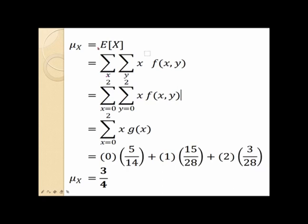For the mean of x, the expected value of x is equal to the double summation over all possible values of x and y of x times the corresponding probabilities f of x, y. Note that the summation over all possible values of y of x times f of x, y gives the marginal distribution of x, denoted by g of x. So the expected value of x is equal to the summation over possible values of x from 0 to 2 of x times the marginal density, yielding 3 fourths. Hence, the mean of x is equal to 3 fourths.